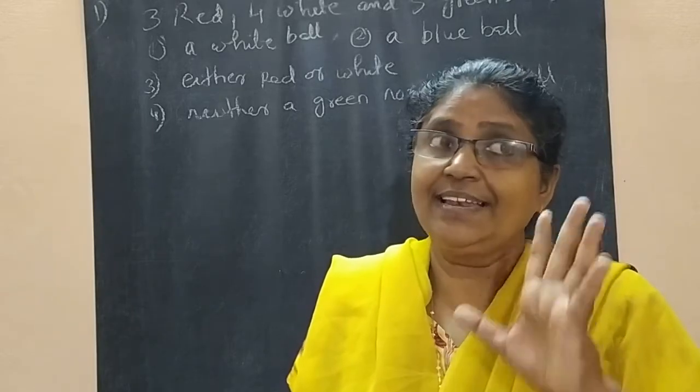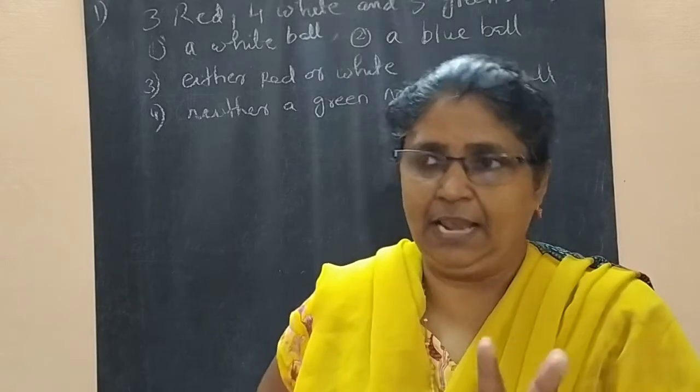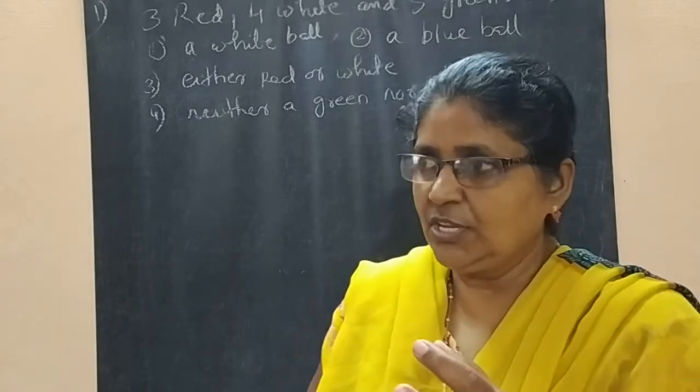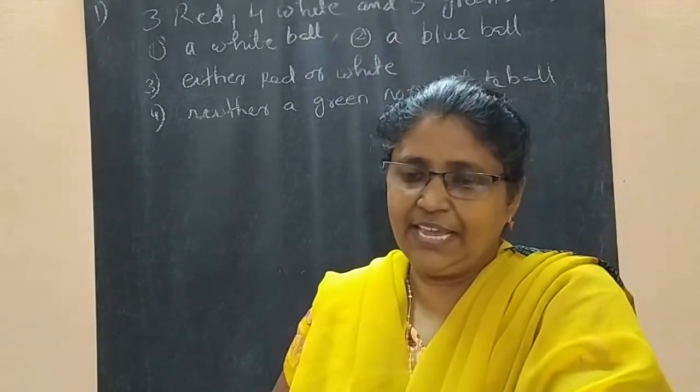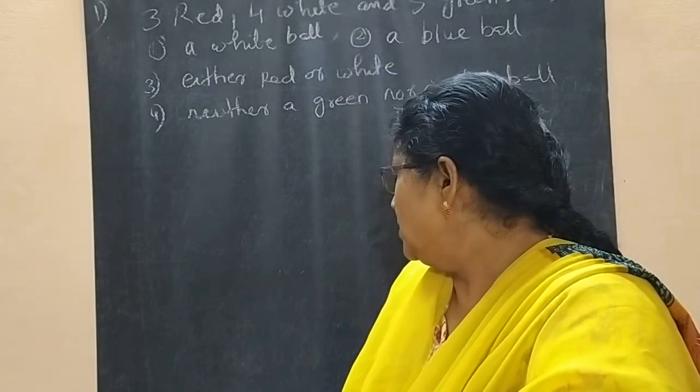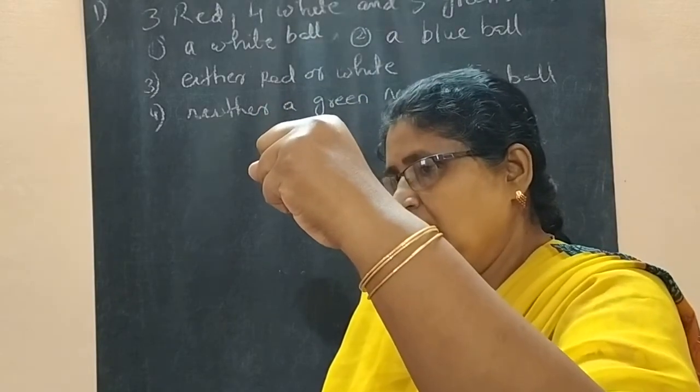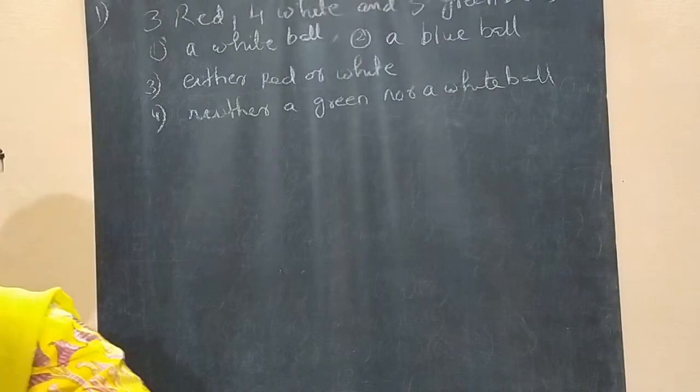Unbiased means equal size, symmetrical. So all the balls are of same size. Without seeing, we are taking a ball from the bag. We are just looking like this and we are taking a ball out.